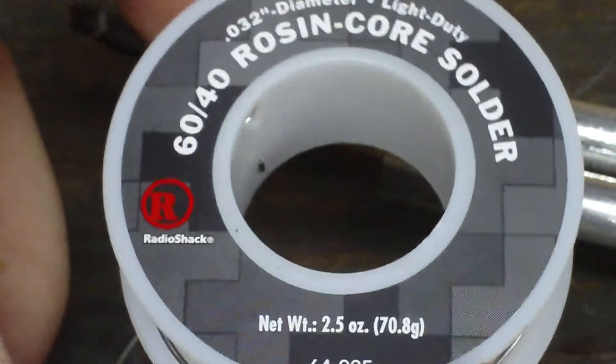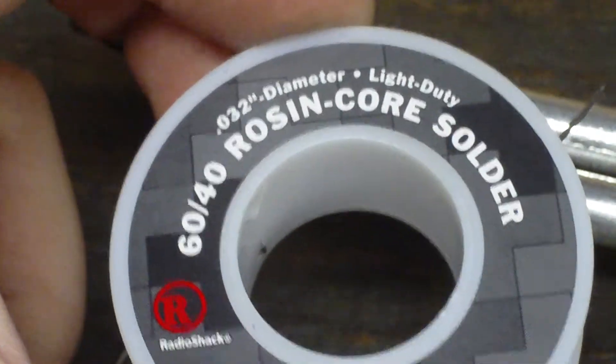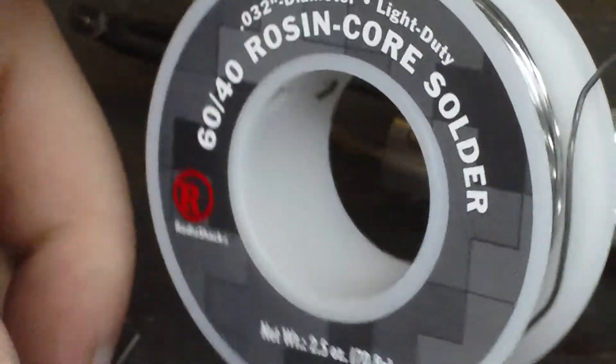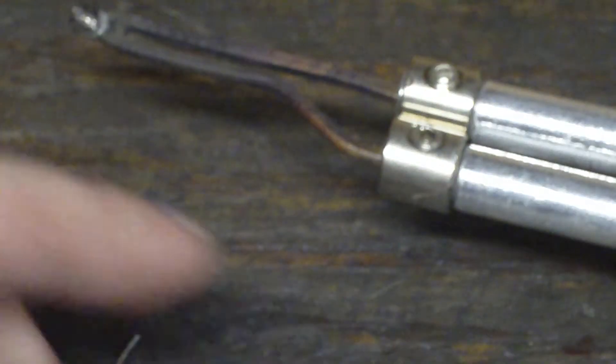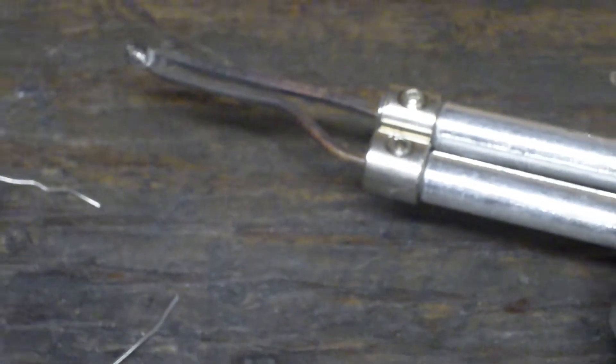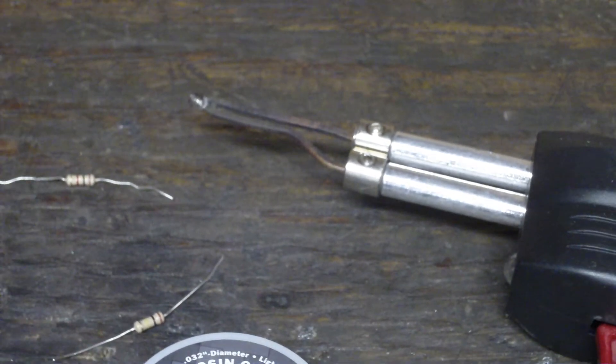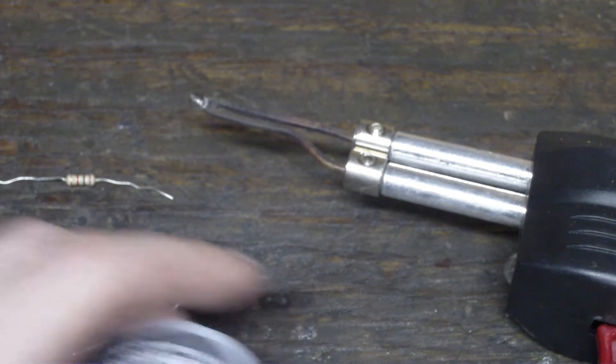Now for the basic electronic stuff, make sure you get rosin core solder. If you get standard acid core solder, you will have to buy flux, and that's generally used when sweating copper pipes and stuff like that.